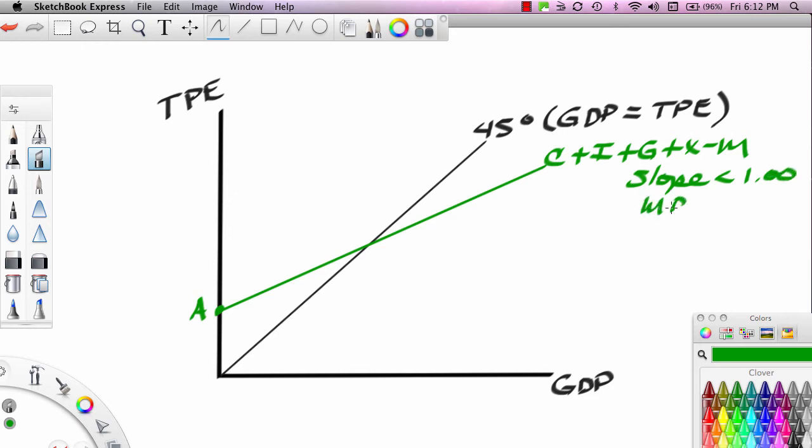Why? Because MPC is less than 1. Remember, MPC plus MPS equals 1. So marginal propensity to consume must be less than 1. In our first segment of this series, we identified an MPC that was equal to 0.75. And that's what we'll actually use. And also in that first segment, we identified an A that is equal to 850. We actually found that A of 850.